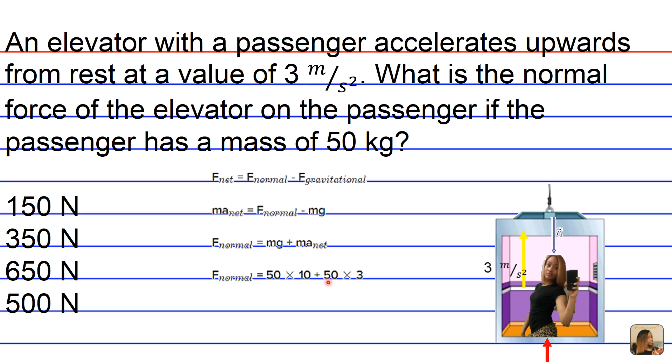So then we add 50, also representing the mass of the passenger, not the weight because weight is really the force of gravity, times 3, representing the acceleration of the passenger outside of gravity.